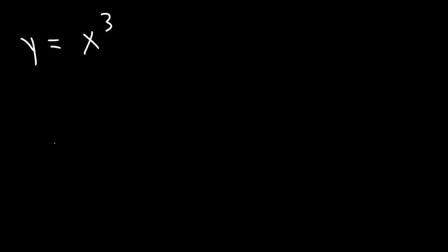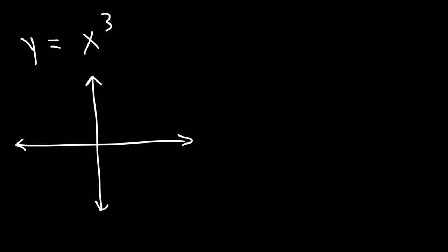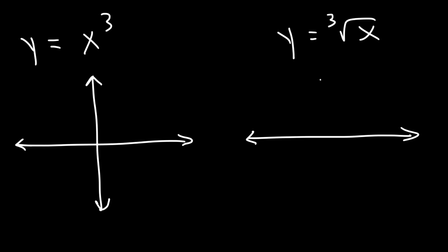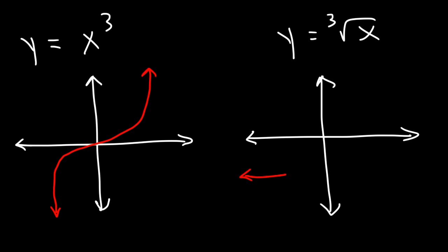Now what about x cubed and also the cube root of x? The fact that they're called functions indicates they'll probably pass the vertical line test. X cubed looks like an S-curve, and the cube root of x looks similar. Both of them are functions — as you can see, they pass the vertical line test.